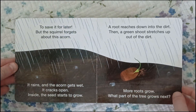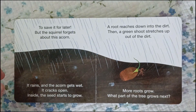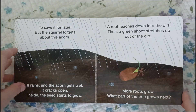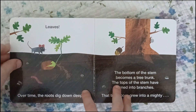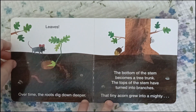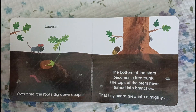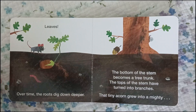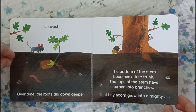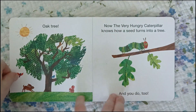We could be like squirrels — plant the acorns in the fall and then see if they grow into little trees. More roots grow. Over time the roots dig down deeper. The bottom of the stem becomes a tree trunk. The tops of the stem have turned into branches. That tiny acorn grew into a mighty oak tree.